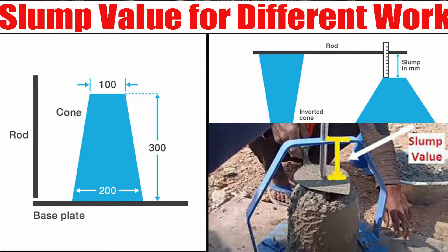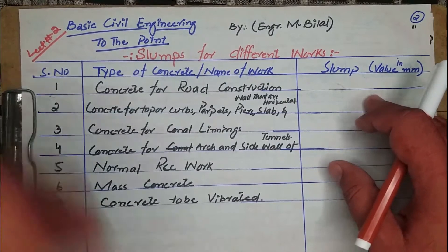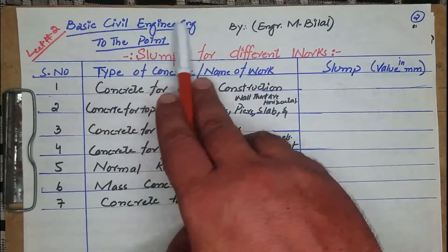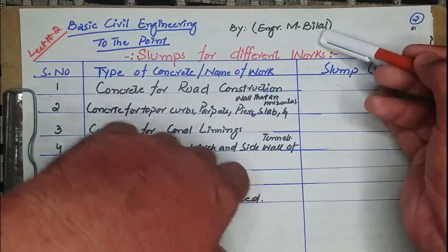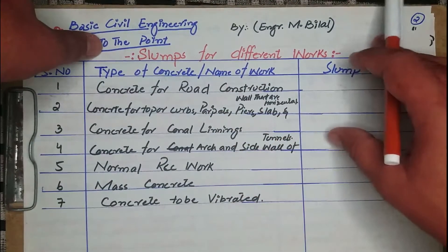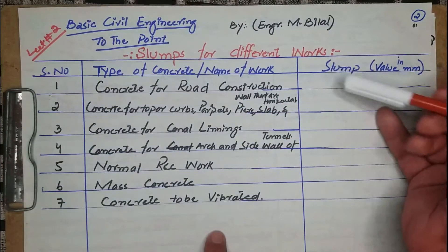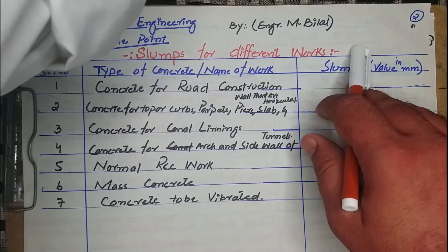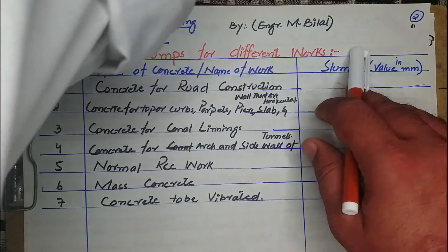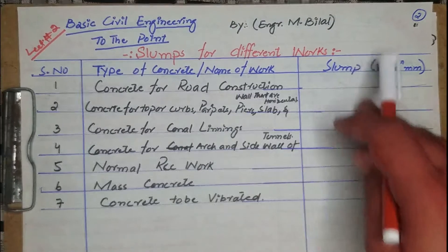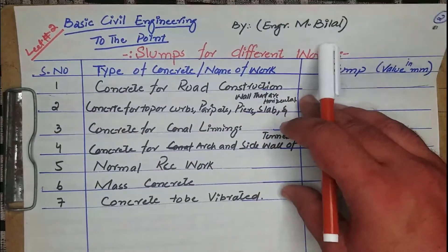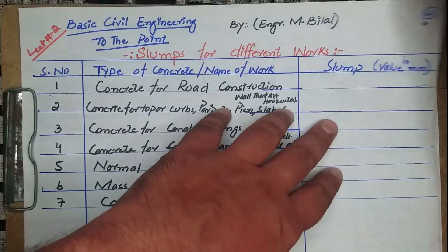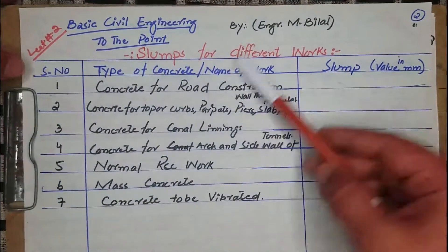Dear viewers, Assalamu Alaikum, welcome to my YouTube channel Practical Civil Engineers. In continuation of the previous lecture, this is lecture number two of Basic Civil Engineering to the Point by Engineer Muhammad Bilal. Our today's topic is slump for different work, meaning the slump value for different types of work is different.